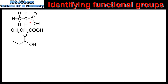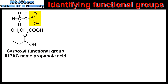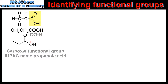In our next example, the molecule has a carbon atom with a double bond to an oxygen and a single bond to an OH group, therefore it contains a carboxyl group. In the condensed structural formula a carboxyl group can be represented as COOH or CO2H. In the skeletal formula we see the double bond to the oxygen and the OH group.